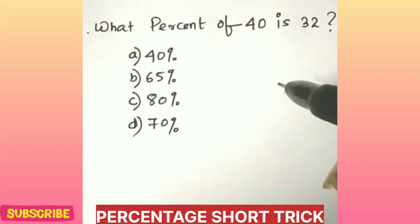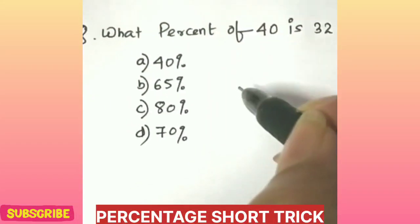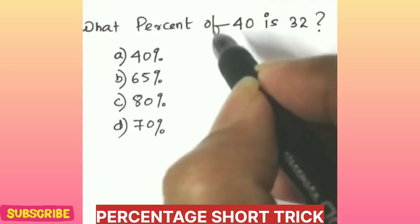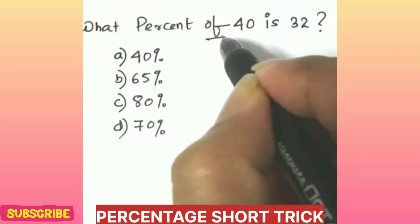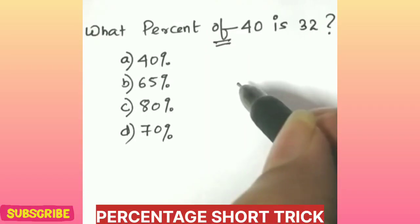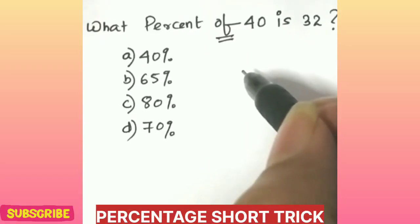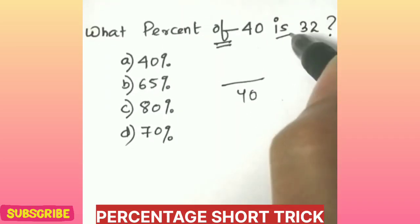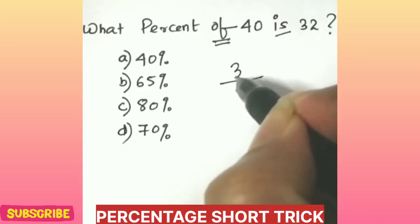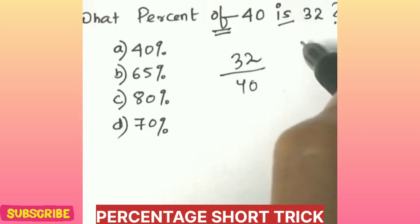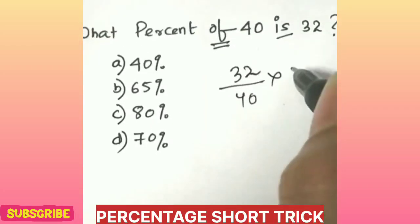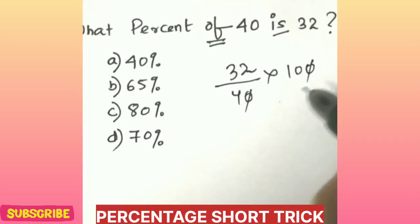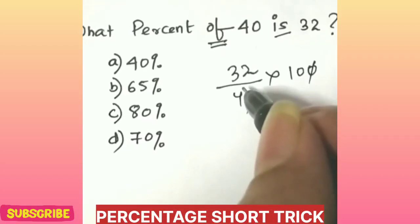Alright friends, now the question is: what percent of 40 is 32? How speedy can you do this? When you find 'of', write that number in the denominator. After 'is', you write the number in the numerator. Since it's asking for percentage, multiply it by 100.